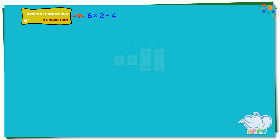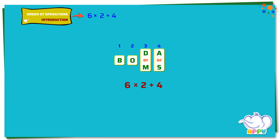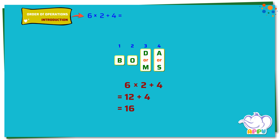Solve this: 6 times 2 plus 4. Let's use BODMAS to solve this problem. We first look for brackets — there are no brackets. Let's ignore order for now. Next, we look for division or multiplication since both rank equally. We have multiplication: 6 times 2 equals 12. This becomes 12 plus 4. Next, we look for addition or subtraction. We have addition: 12 plus 4 which equals 16. So the answer is 16.